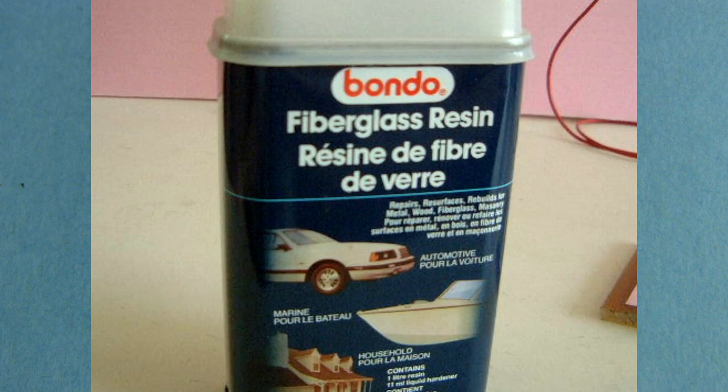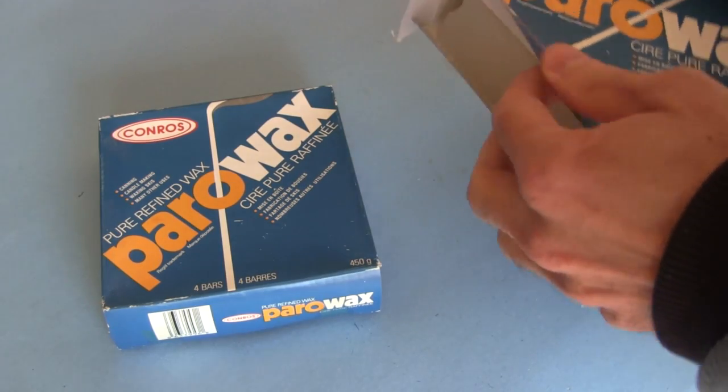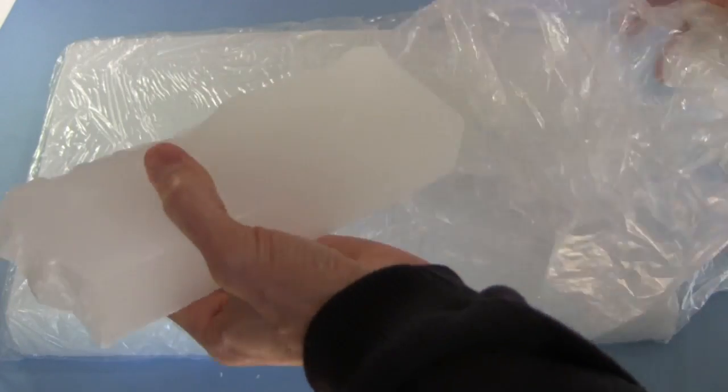One source of resin is automotive stores, since it's used with fiberglass to repair damage to car bodies. I get this wax from grocery stores, where it's used for canning, and this one from art stores, where it's used for making candles.